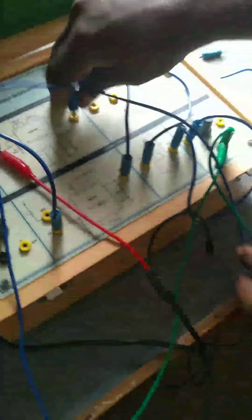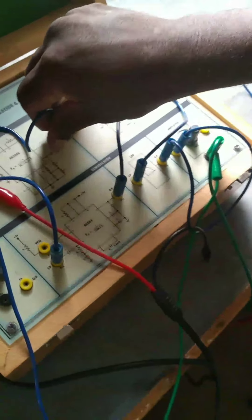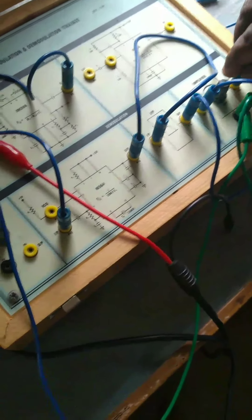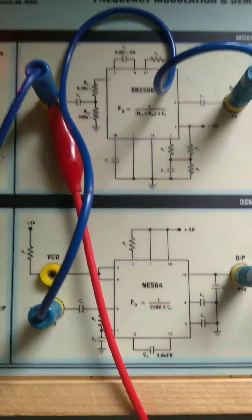FM output goes to FM demodulator. NE564 - that is the demodulator. FM demodulator removes the carrier.